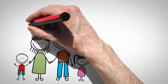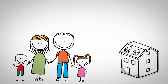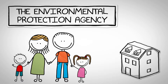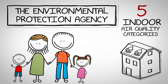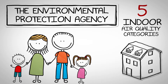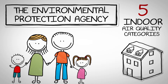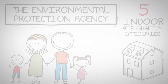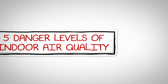When it comes to assessing a family's indoor living environment, the Environmental Protection Agency identified five indoor air quality categories of concern that all homeowners need to be educated about in their home. They are referred to as the five danger levels of indoor air quality.